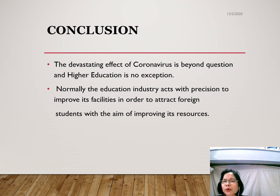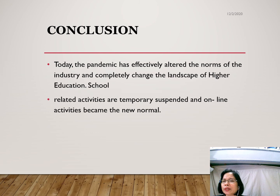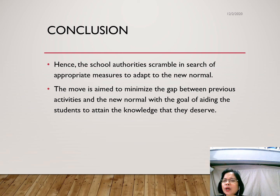The devastating effect of coronavirus on higher education is beyond question. Normally, the education industry acts with precision to improve its facilities in order to attract foreign students. Today, the pandemic has effectively altered the norms of the industry and completely changed the landscape of higher education. School-related activities are temporarily suspended and online activities became the new norm. Hence, school authorities scramble in search of appropriate measures to adapt to the new normal, aimed at minimizing the gap with previous activities and aiding students to obtain the knowledge they deserve. It is therefore a challenge to other researchers to pursue further study in order to determine the factors to be considered alongside the pandemic.